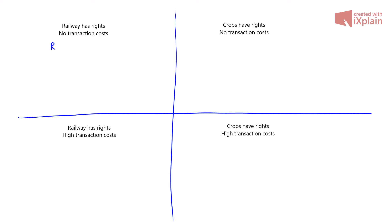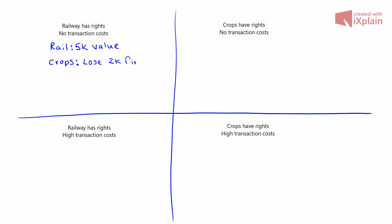The first situation is where the railway has rights and there are no transaction costs. Our setup is that if the railway exists, it gets $5,000 of value from its operation. The crops, if there is a fire from sparks from the railway running by, lose $2,000. They also have the alternative of avoiding the fire by putting up a fence, which costs $1,000.